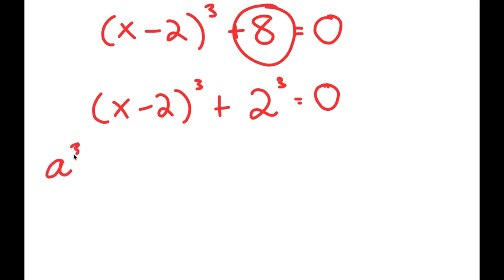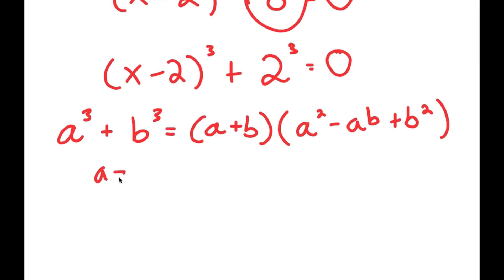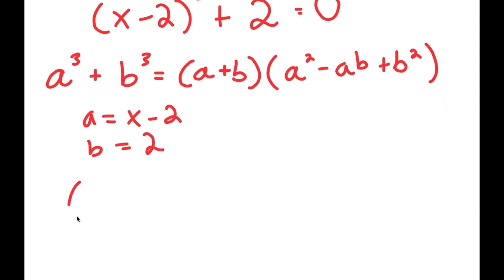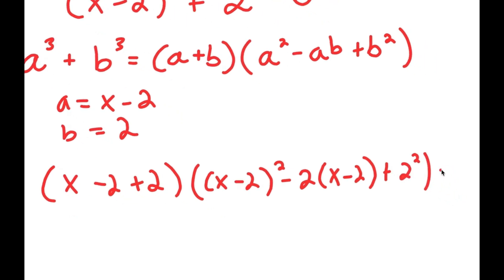The reason I did that is because if I have something in the form a to the power of 3 plus b to the power of 3, this is equal to a plus b times a squared minus ab plus b squared. So in this case, a is equal to x minus 2 and b is equal to 2. So I get x minus 2 plus 2 times x minus 2 squared minus 2 times x minus 2 plus 2 squared, and this is equal to 0.